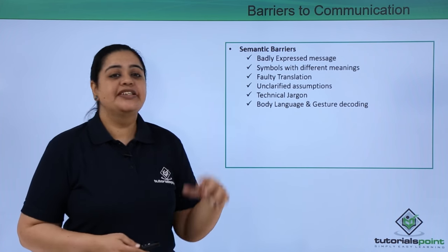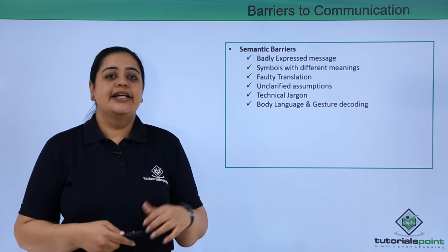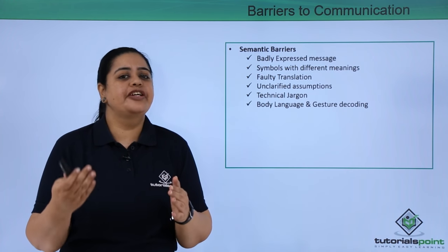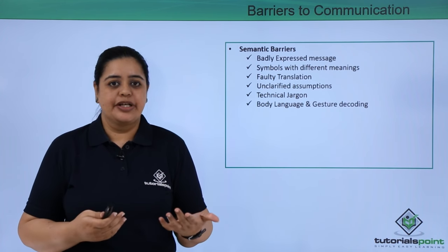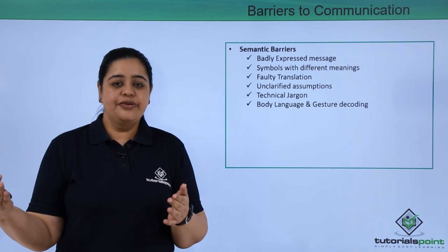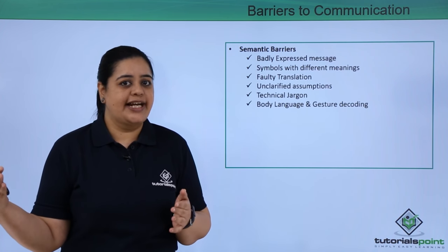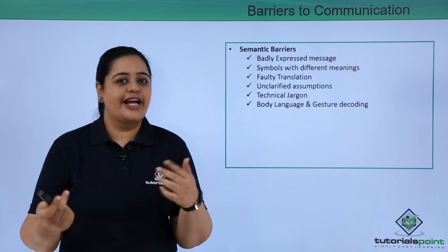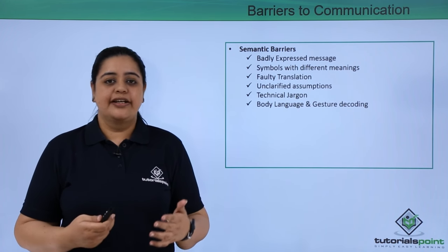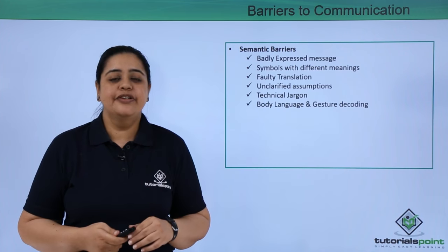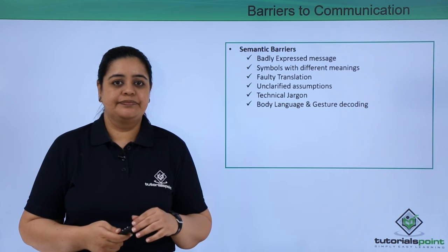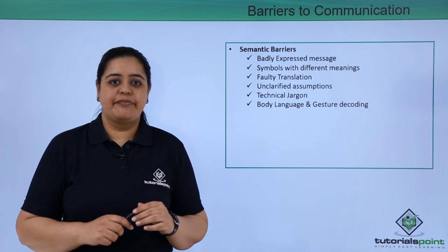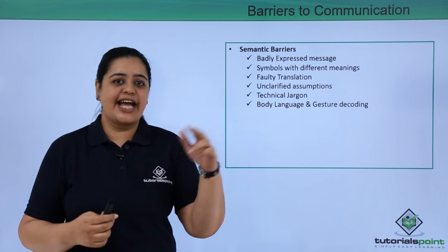Symbols with different meanings: sometimes there are certain words which have different meanings. For example, 'value' — 'do I have a value in your life?' versus 'what is the value of gold going on?' You can see how 'value' has a different meaning. Similarly, 'jam' — 'I need jam' versus 'there is a jam outside my house' — two completely different meanings.